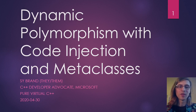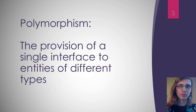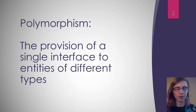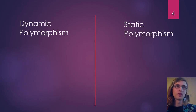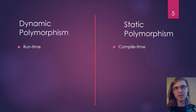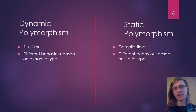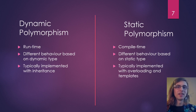Welcome, my name is Sai. I'm Microsoft's C++ developer advocate and I'm going to be talking about dynamic polymorphism with code injection and metaclasses. Polymorphism itself is the provision of a single interface for entities of different types — you have one interface you program to, and that gives you different behavior depending on what the types are. The two types we're concerned with today are dynamic polymorphism and static polymorphism. Dynamic polymorphism is at runtime; static is at compile time. In C++, dynamic polymorphism is mainly done with inheritance, and static polymorphism is usually done with overloading or templates.